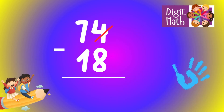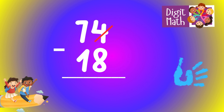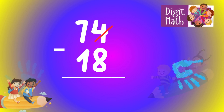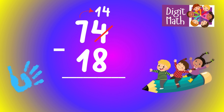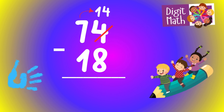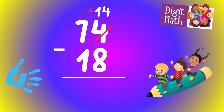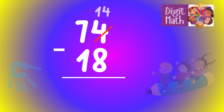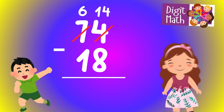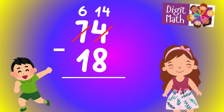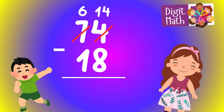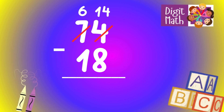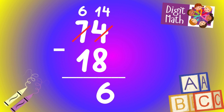Let's go to the answer. In the units column, we have 4 minus 8. Since it can't subtract 8 from 4, we need to borrow from the tens column. In the tens column, we have 7. We take 1 from the tens, leaving 6 in the tens column, and turning the units column into 14. Now, we have 14 in the units column. Subtract 8 from 14, which equals 6.